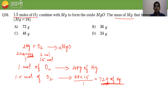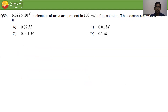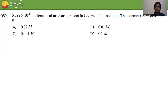Coming to question number 99: 6.022 × 10²³ molecules of urea are present in 100 mL of its solution. We have to find the concentration in terms of molarity (capital M). Molarity = number of moles of solute ÷ volume of solution in liters.